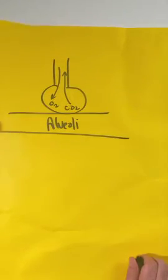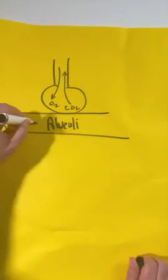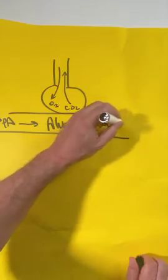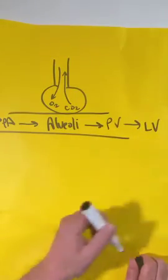Now blood flows from the RV into the pulmonary artery, into the capillary membrane interface, back into the pulmonary veins, and back into the left ventricle, out into the systemic circulation.